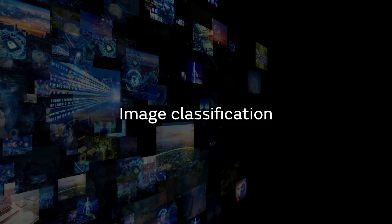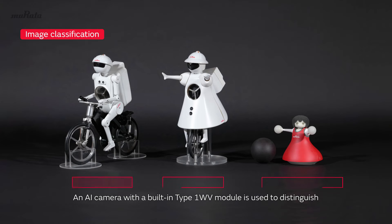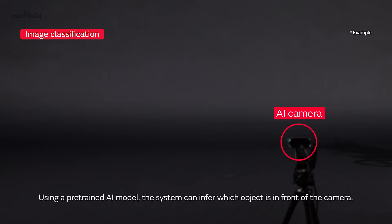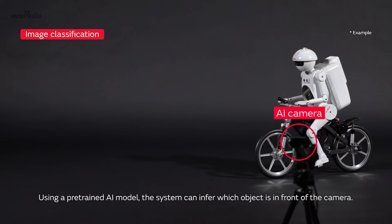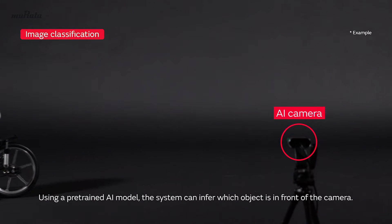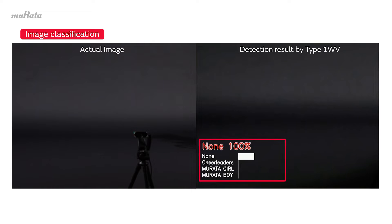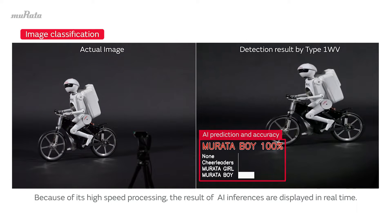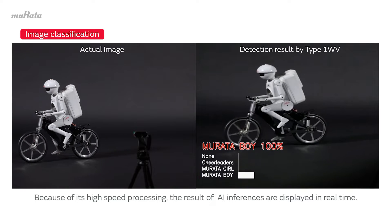Image classification demonstration: An AI camera with a built-in Type 1 WV module is used to distinguish between Murata Boy, Murata Girl, and Murata Cheerleader. Using a pre-trained AI model, the system can infer which object is in front of the camera. Because of its high-speed processing, the results of AI inferences are displayed in real time.